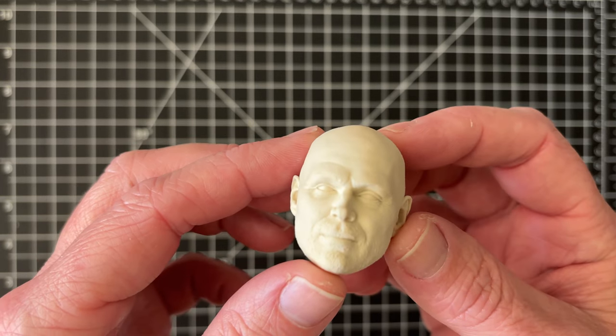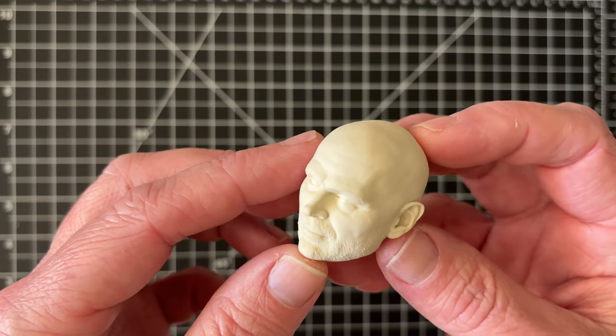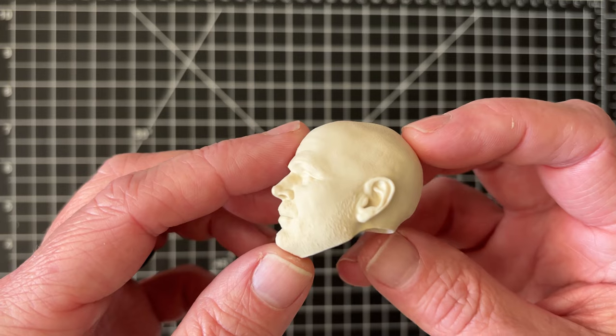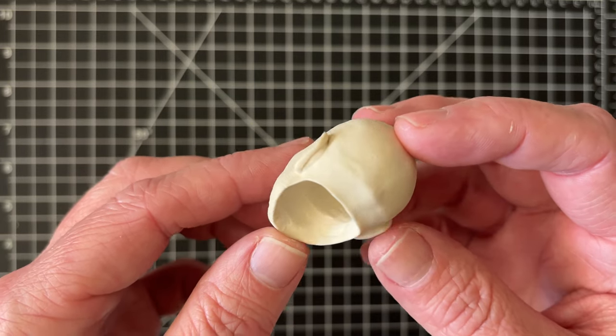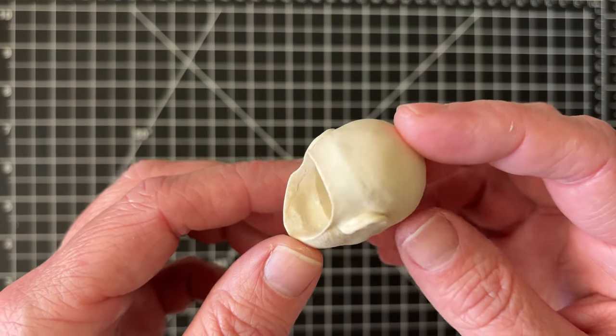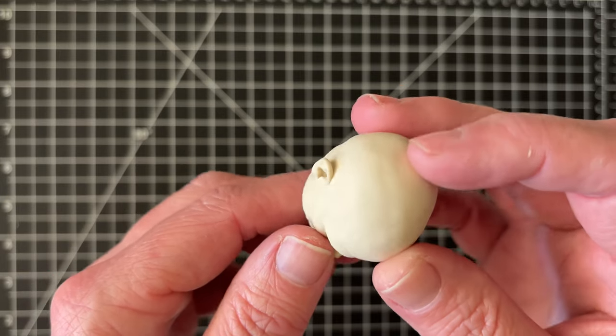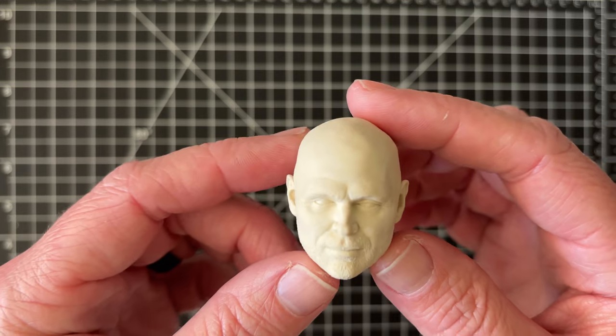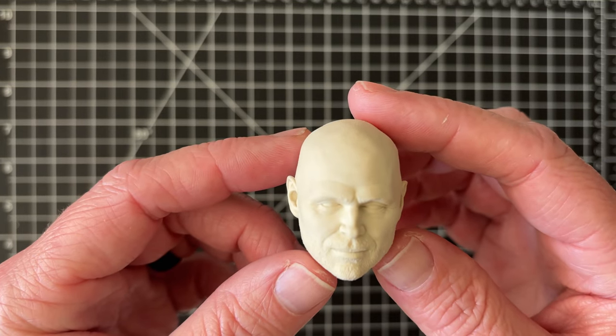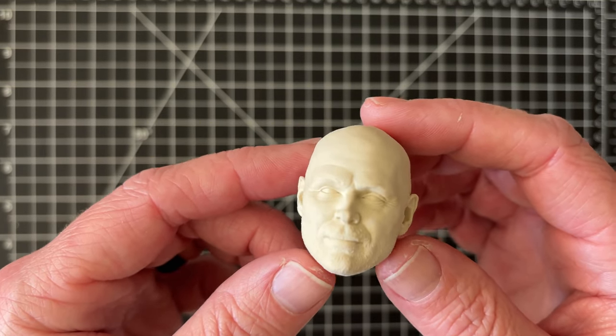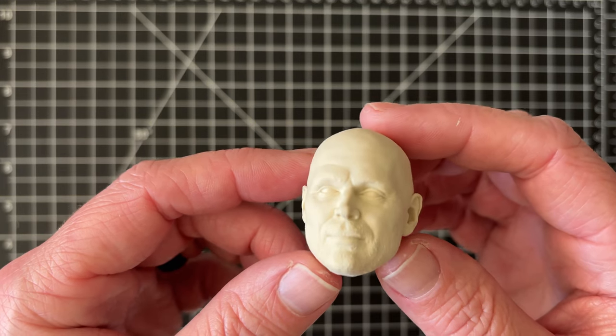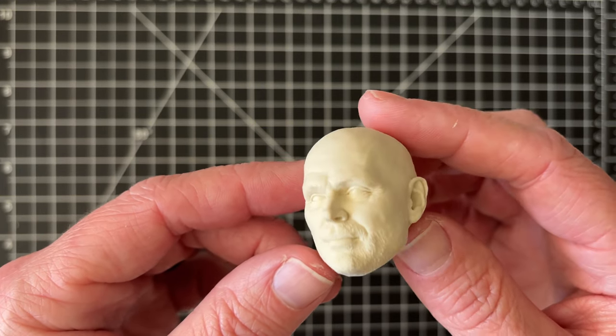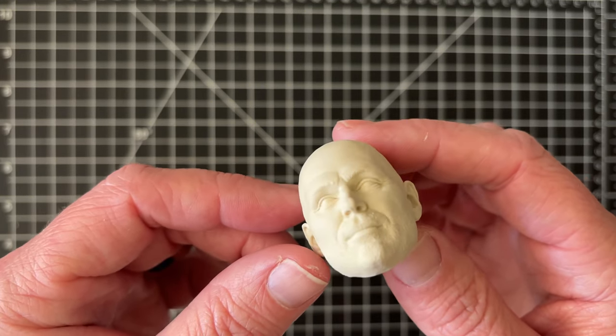This, for those of you who do not know, is a head sculpt of Bill Burr, aka Migs Mayfield, one of my favorite characters from the Mandalorian, even though he only has a handful of screen time. I don't think Hot Toys is going to make one of these. If they were going to, I think they probably would have already done that. So I had to take matters into my own hands.